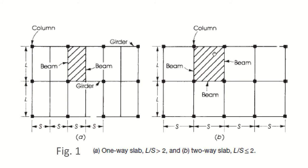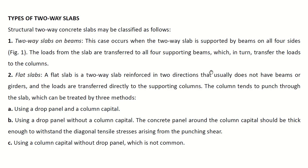Types of two-way slabs: structural two-way concrete slabs may be classified as follows. Number one: two-way slabs on beams. This occurs when the two-way slab is supported by beams on all four sides. Loads from the slab are transferred to the four supporting beams, which in turn transfer them to the columns. The percentage of load transferred to the beams depends on the aspect ratio — that is, the length-to-width ratio.